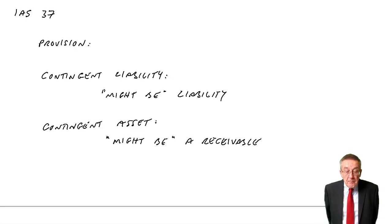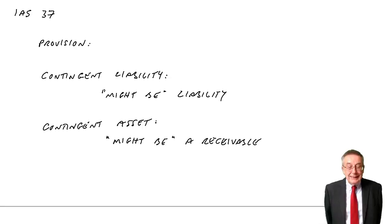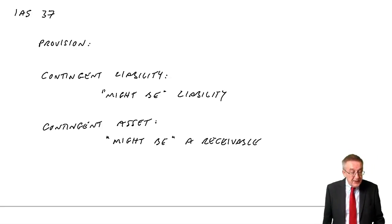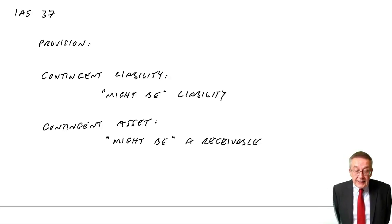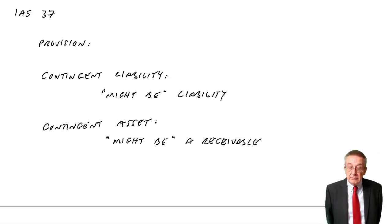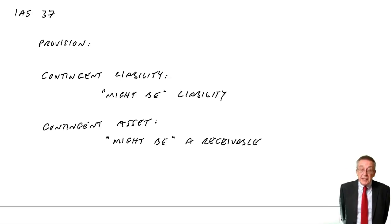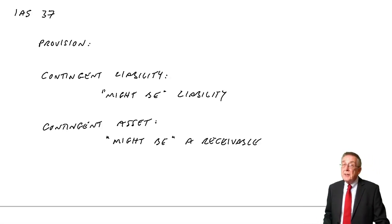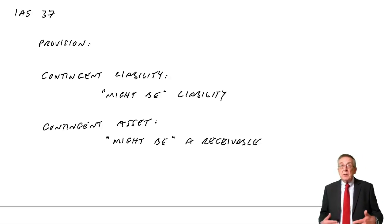Finally, contingent assets — where we might receive money. If it's virtually certain that we're going to receive some money, more than 95% likely, then we show it as owing. If it's probable — more than 50% — we show a note: we won't show it as owing in the accounts, but we will write a note saying it's probable we're going to receive this money. However, if it's less than 50% — either possible or remote — then we don't show anything as owing and we don't even write a note. It's not a problem in terms of numbers, but it is in terms of definitions and the way we treat it: probable, possible, remote.